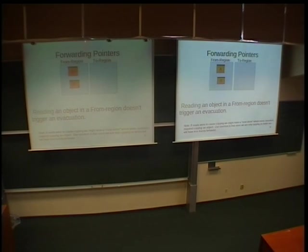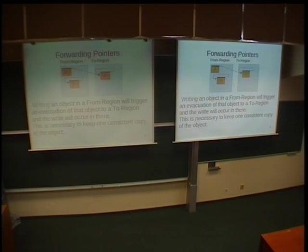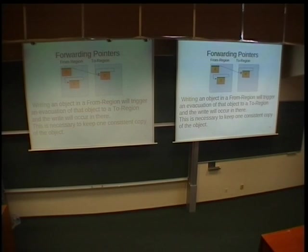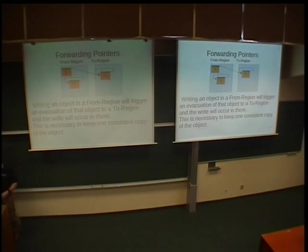How is reading performed when Shenandoah moves an object? Reading is very easy — we just use the value of the forwarding pointer to point to the right object and read the content of some object attributes. Writing is more difficult, because writing means we are going to change the value of the object, for example the value of some attribute, and we need to write only to the object already moved to the new region, not to the old copy. Writing is the operation where two copies of the original object could become different — this is handled by the mutator.